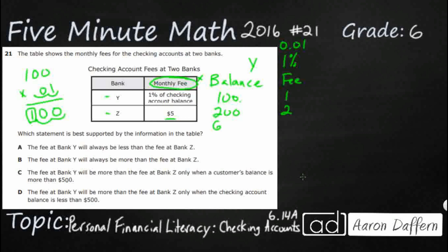What if we were to get a $600 balance? Now you're paying a $6 fee, and that is going to actually be greater than Bank Z. So it evens out at $500 — $500 times 1% gets you exactly $5. Once you get above $500, it's not going to be cheaper. So that's a no on A.